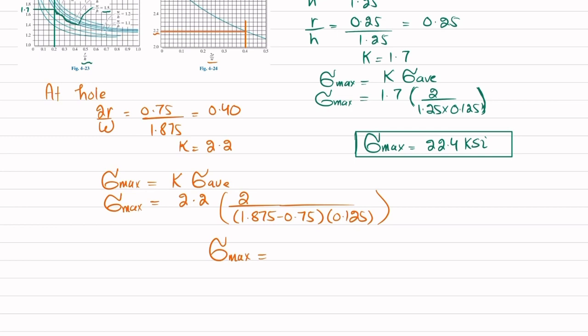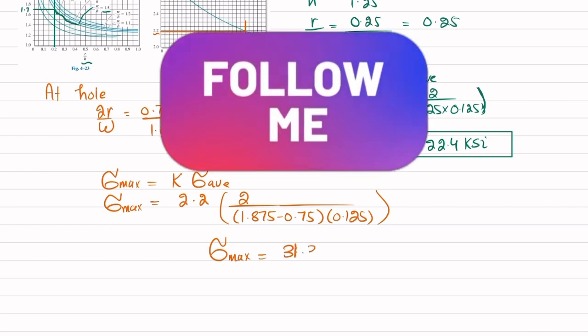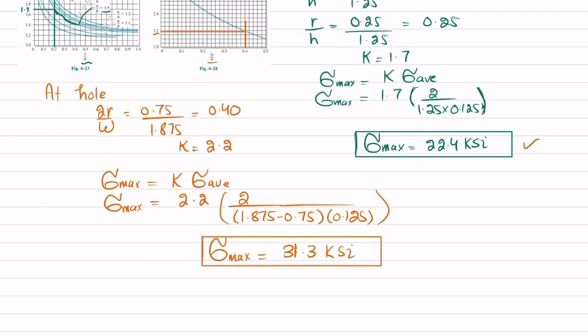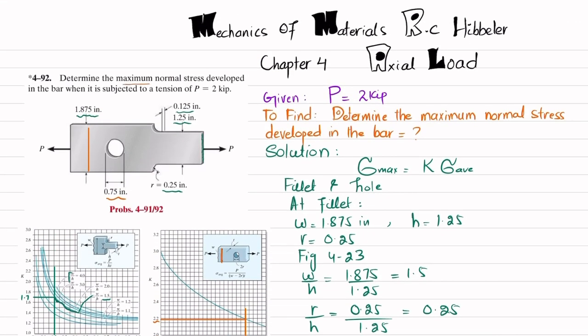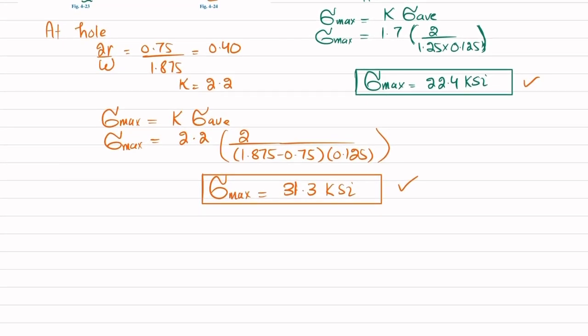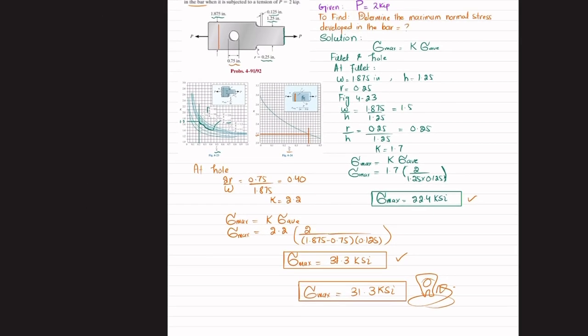When you solve this, you will get the maximum stress or stress concentration near the hole, which is 31.3 ksi. Now you have two values: one is 22.4 ksi and another one is 31.3 ksi. In the question, we have been asked to determine the maximum normal stress developed in the bar. So the answer will be the maximum stress, which is 31.3 ksi, and that is the answer to our question.